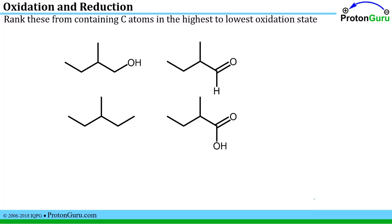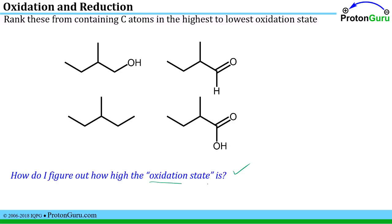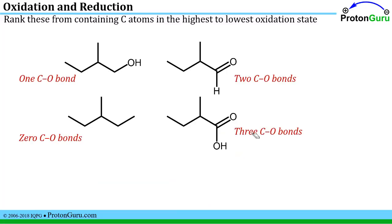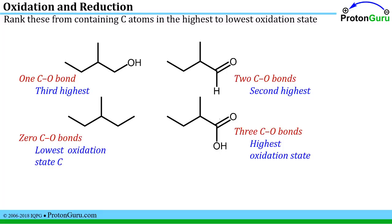The next question asks us to rank molecules containing carbon atoms from the highest to the lowest oxidation state. More carbon-oxygen bonds, or fewer carbon-hydrogen bonds, leads to a higher oxidation state. In this case we only have oxygens in our structures, so we're counting carbon-oxygen bonds: one here, two here, three there, and none in the last structure. The highest oxidation state carbon has three bonds to oxygen, second highest has two, third has one, and the lowest has no carbon-oxygen bonds.